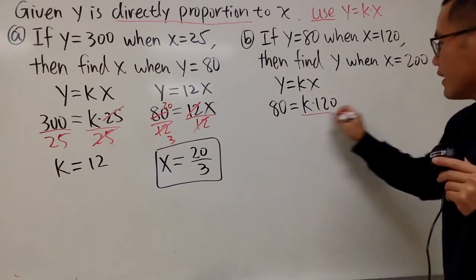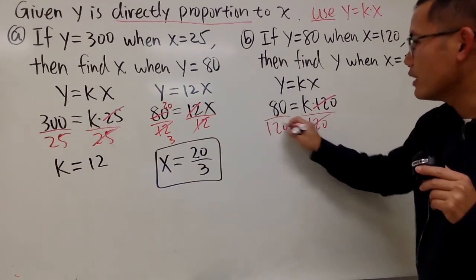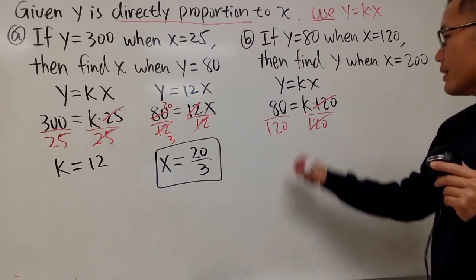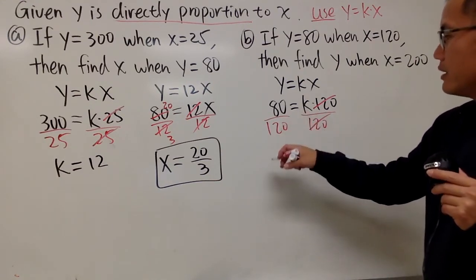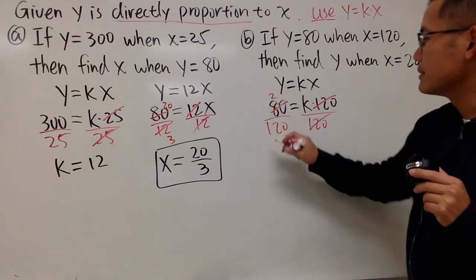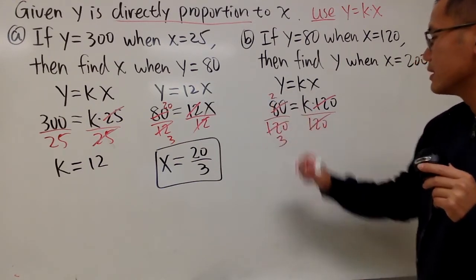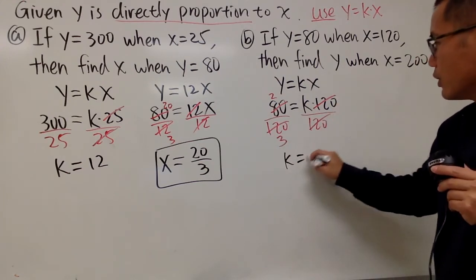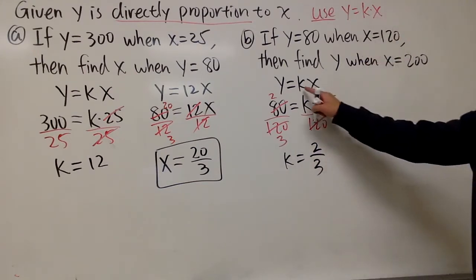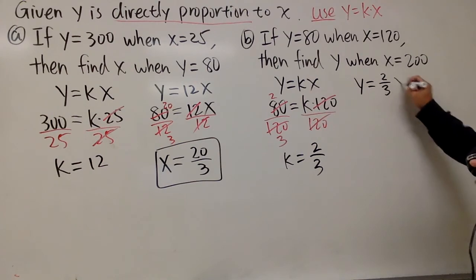So same thing. Go ahead and divide it by 120, so they cancel. Well, this case, let's divide this by 40. 40 goes into 80 two times, and 40 goes into 120 three times. So k is equal to 2 over 3. Right? Like this. Well, put this back for this. So we have y equals 2/3 x.